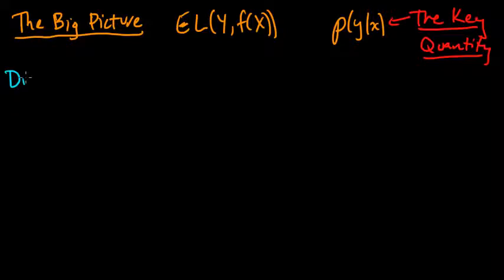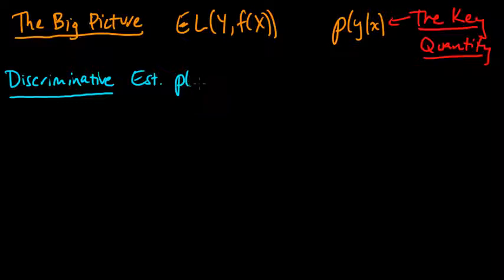So let's think about, first, discriminative methods. A discriminative method says, let's take advantage of this fact. The fact that we only really needed this conditional distribution. A discriminative approach says, estimate these conditional distributions, p of y given x, directly using your data.